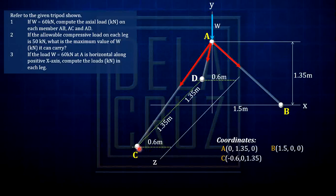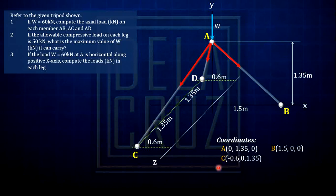How about point C? The x-coordinate is negative 0.6 because it is to the left along the x-axis. The y-coordinate is 0, and the z-coordinate is positive 1.35. How about node D? The coordinates are negative 0.6 — going to the left — y-coordinate is 0, and the z-coordinate is negative 1.35.